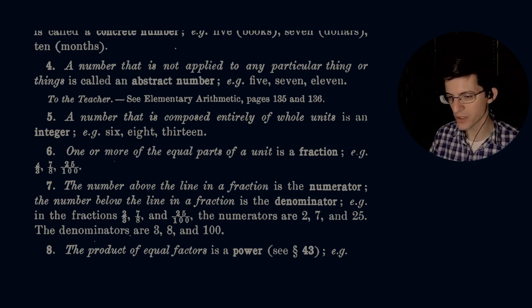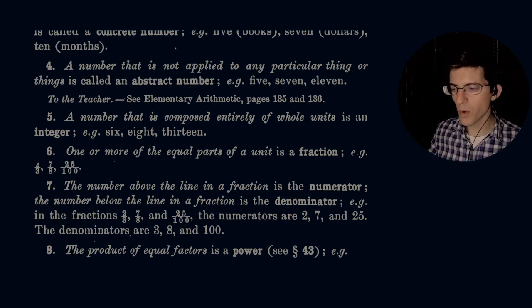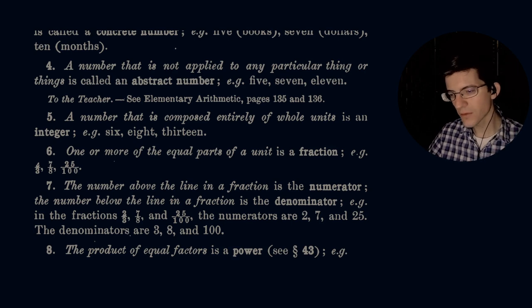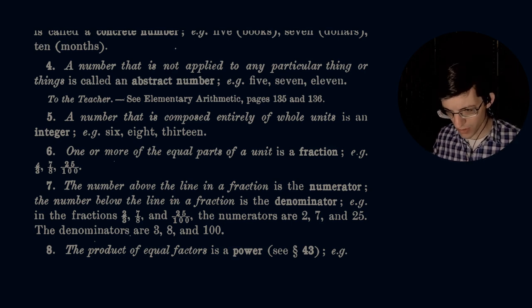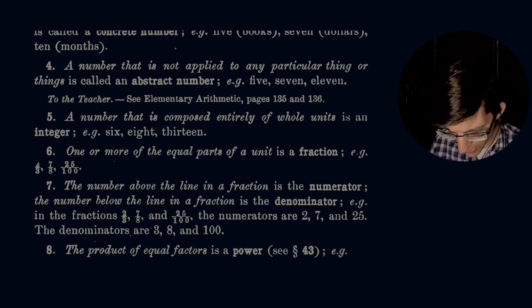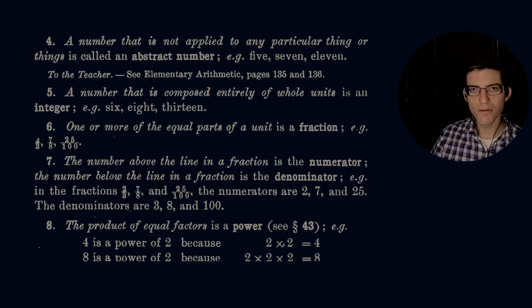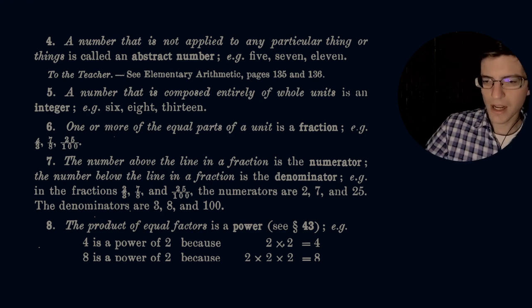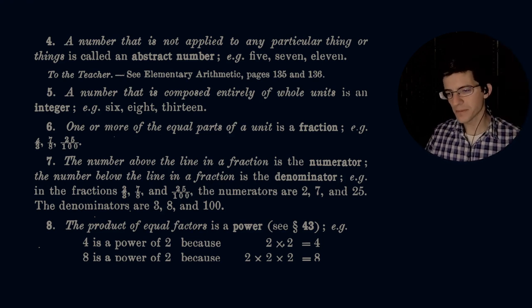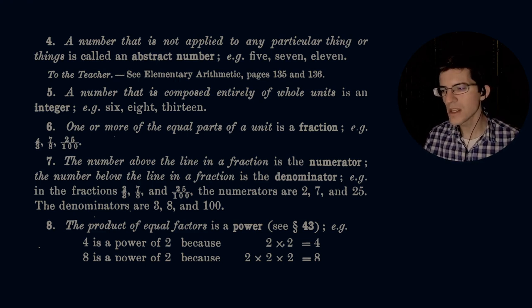Moving on to number six: one or more of the equal parts of a unit is a fraction, e.g. two thirds, I think that's supposed to be two thirds, four thirds, two thirds, seven eighths, 25/11. So one or more of the equal parts of a unit is a fraction.